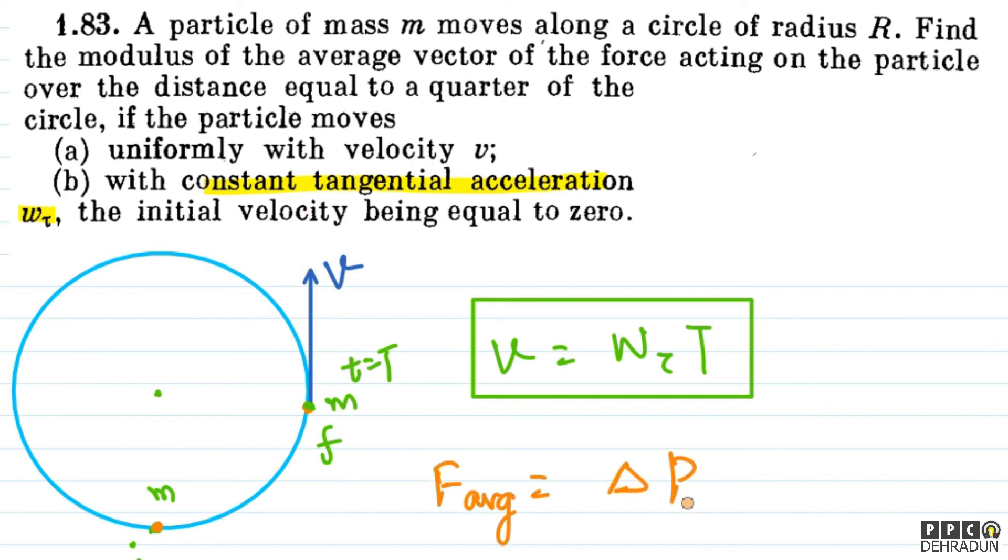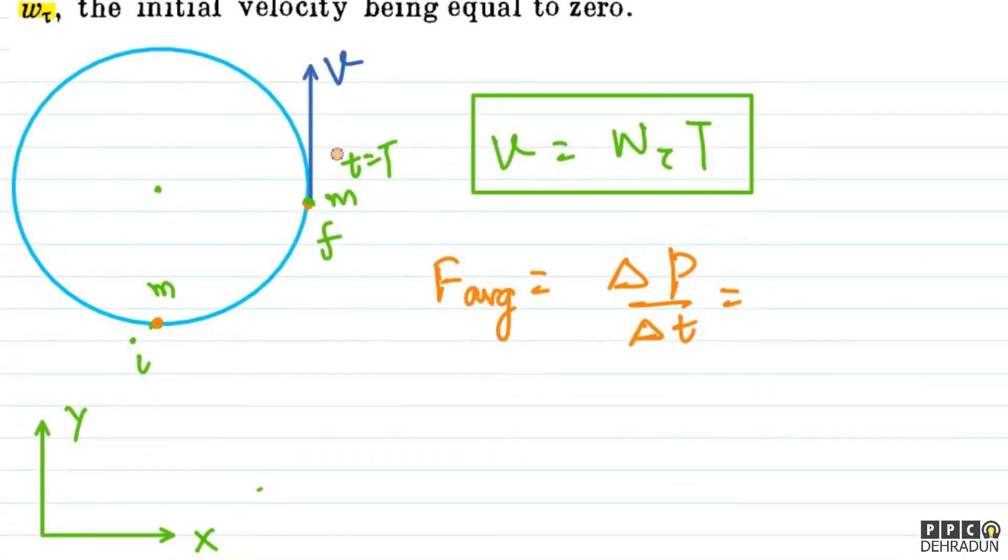Again, F_average is change in momentum upon time taken. Following the same approach, the final answer comes out to be simply m into w_tau.